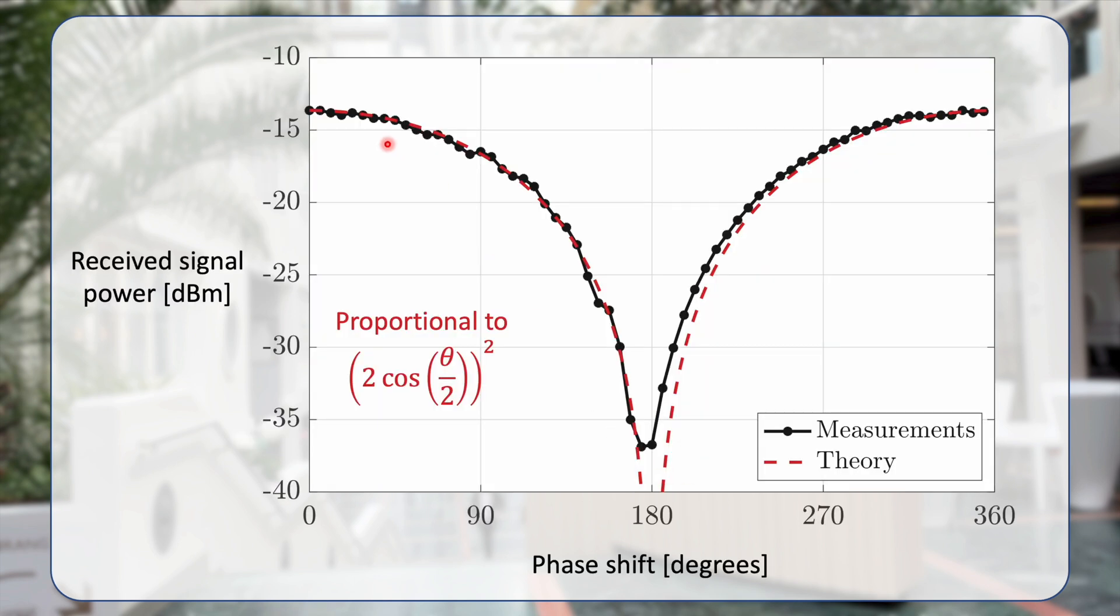This graph here is showing all of the measurements that I was doing in the experimental setup. These are the black dots and I've drawn lines in between them. On the vertical axis, we see the received signal power. And on the horizontal axis, we see the phase shift in degrees from 0 degrees, 90, 180, 270, and 360 degrees.